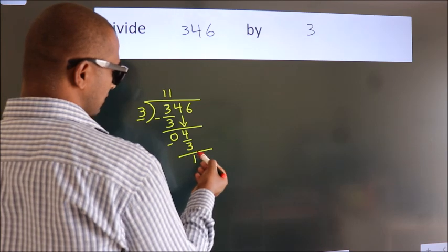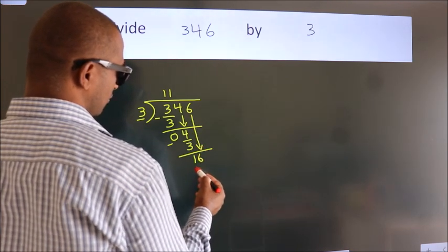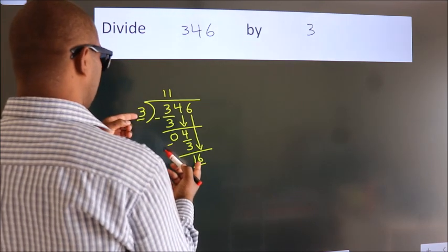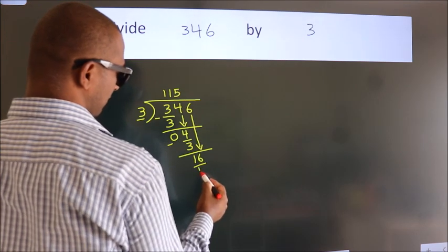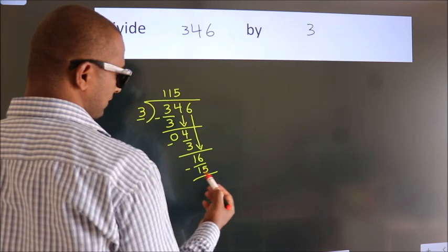After this, bring down the beside number, so 6 down. So 16. A number close to 16 in 3 table is 3 fives, 15. Now, we subtract, we get 1.